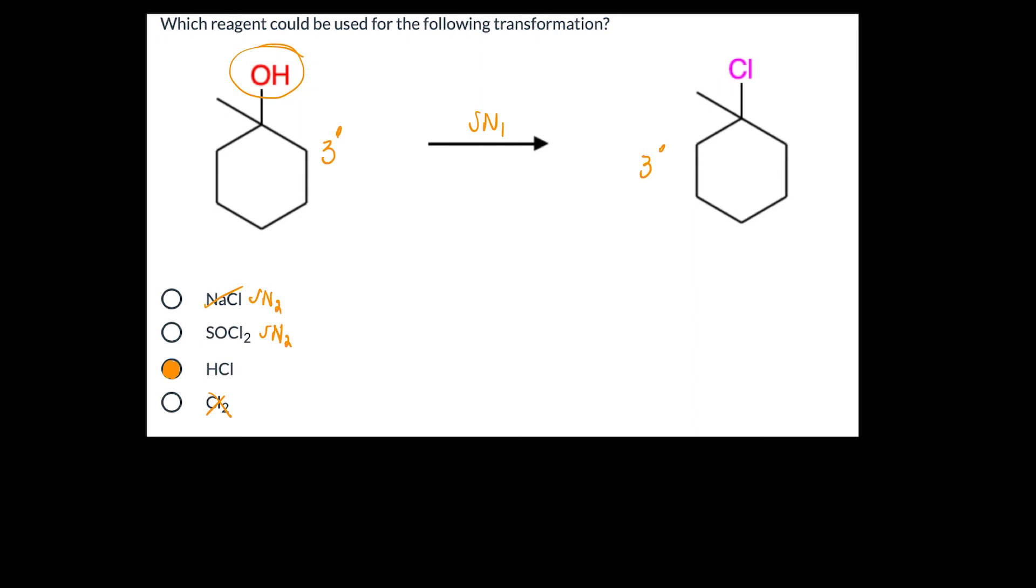Let me work through the reaction mechanism for you. In the first step, we're going to have this tertiary alcohol. And we want to draw in the lone pairs on the alcohol. And hydrogen chloride is an acid that will serve to protonate that alcohol or hydroxyl group.